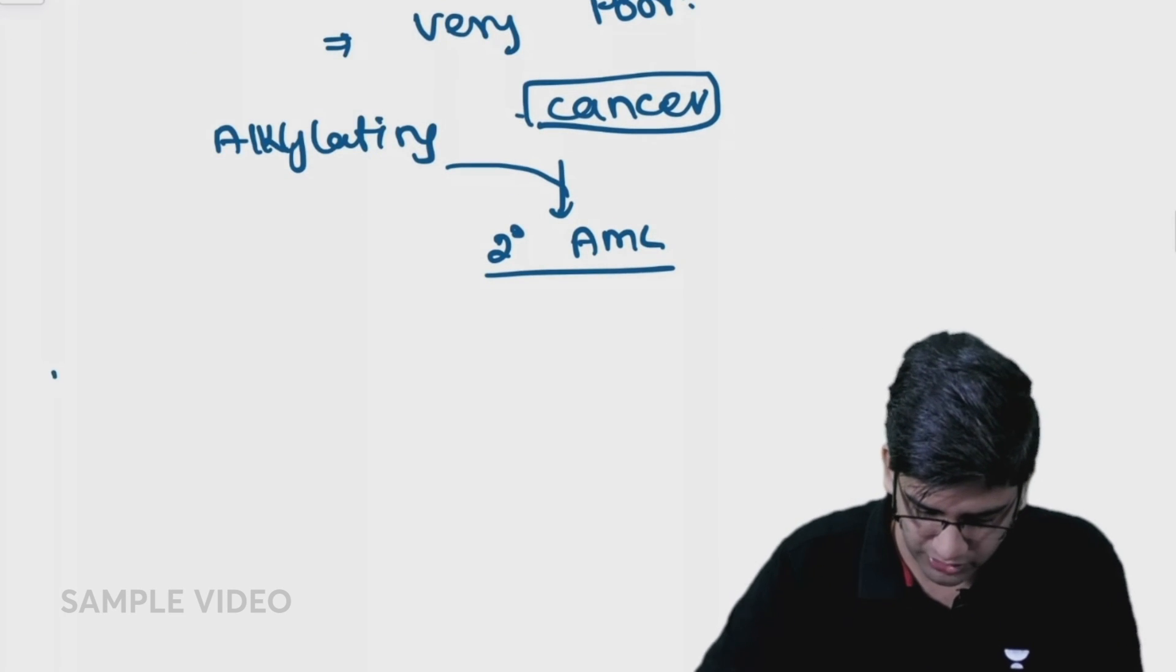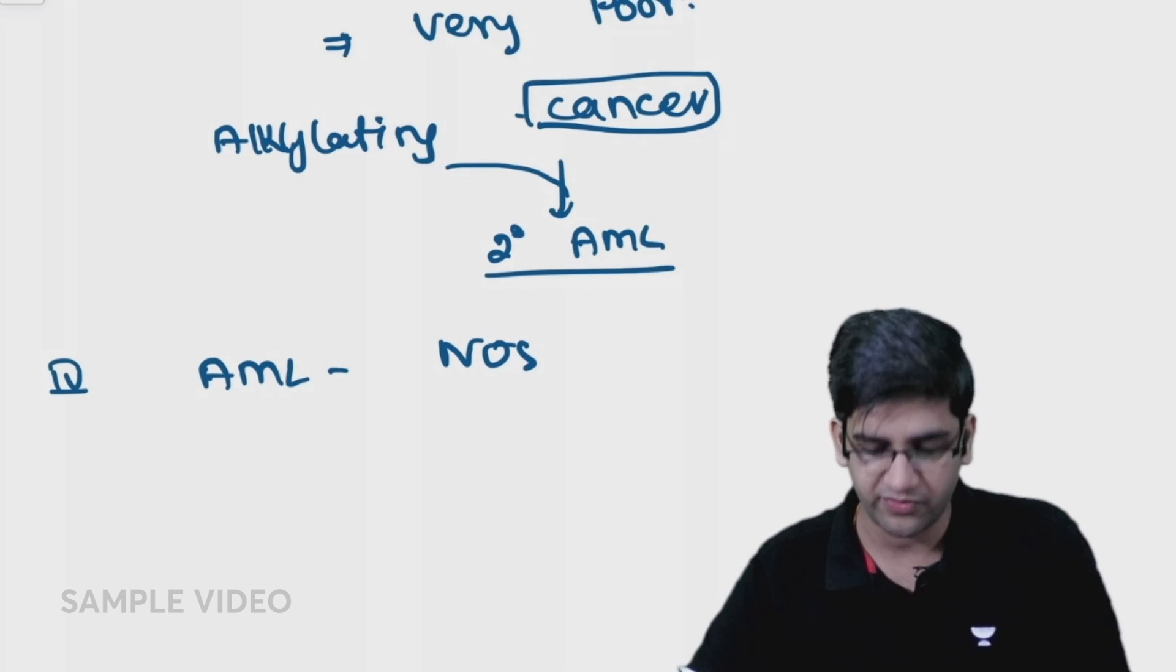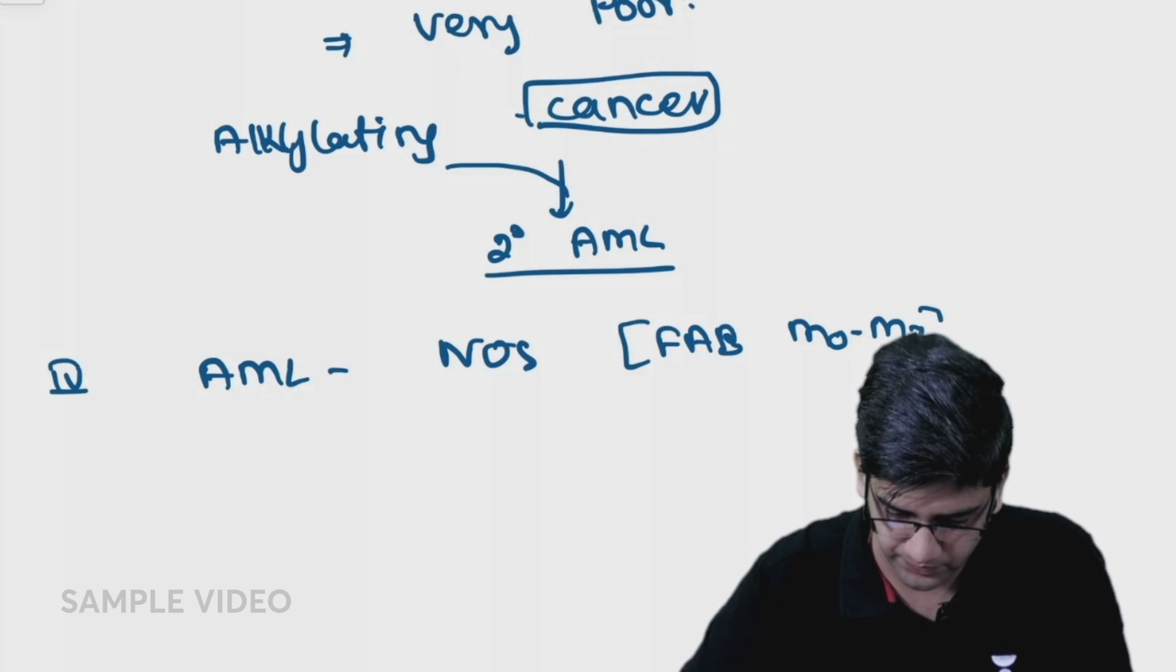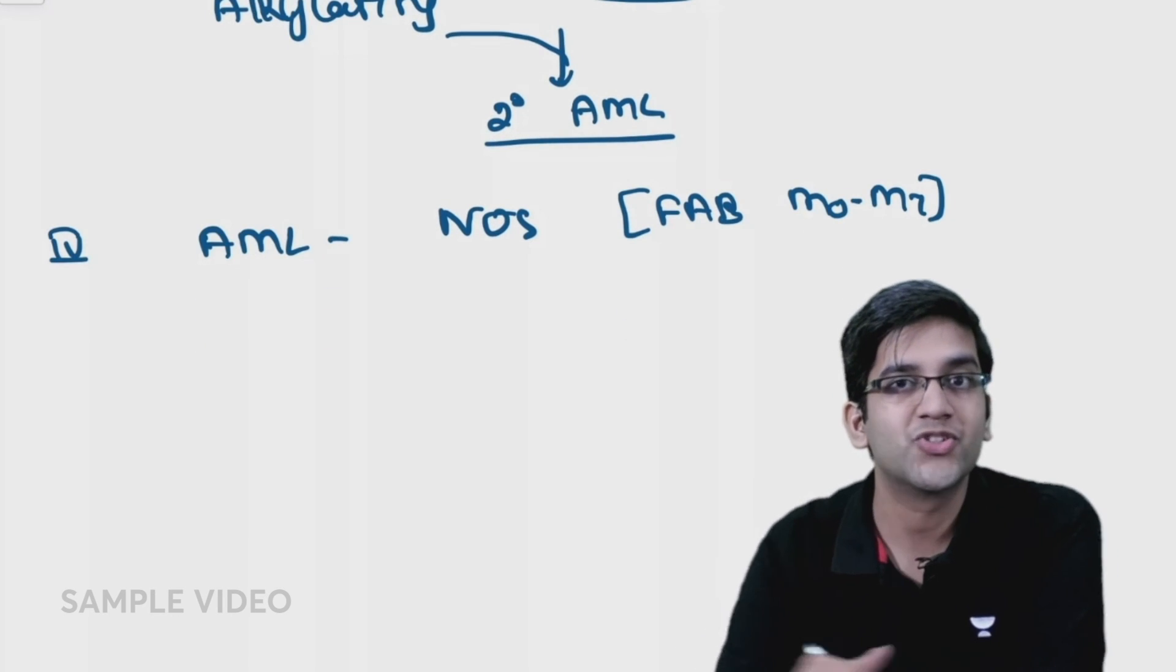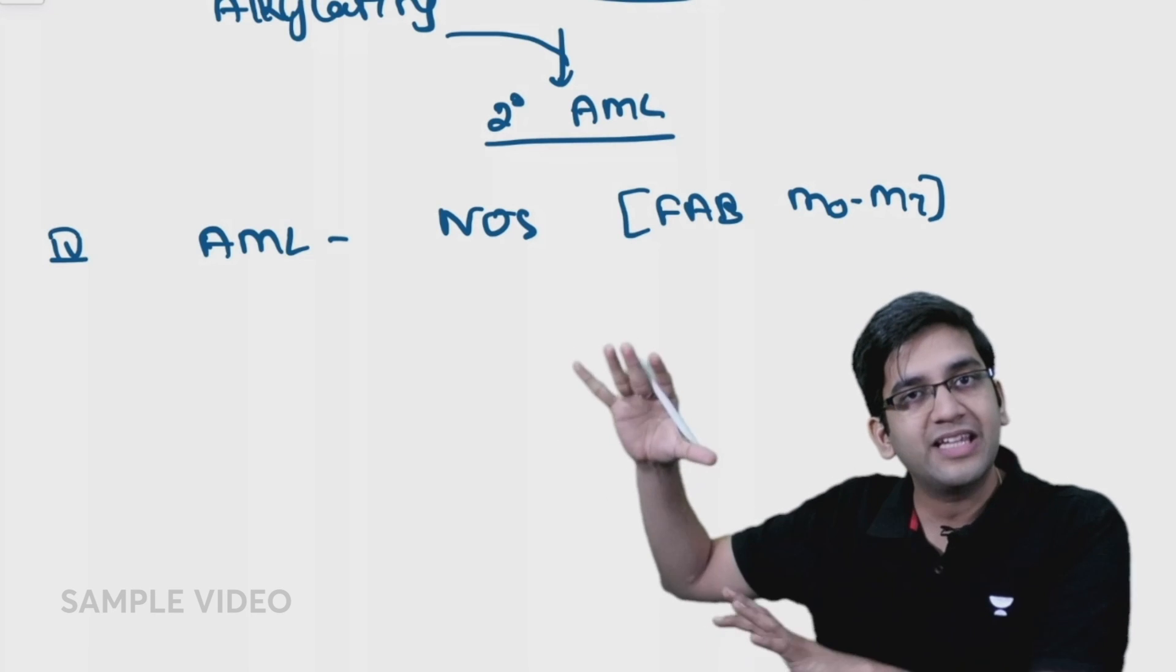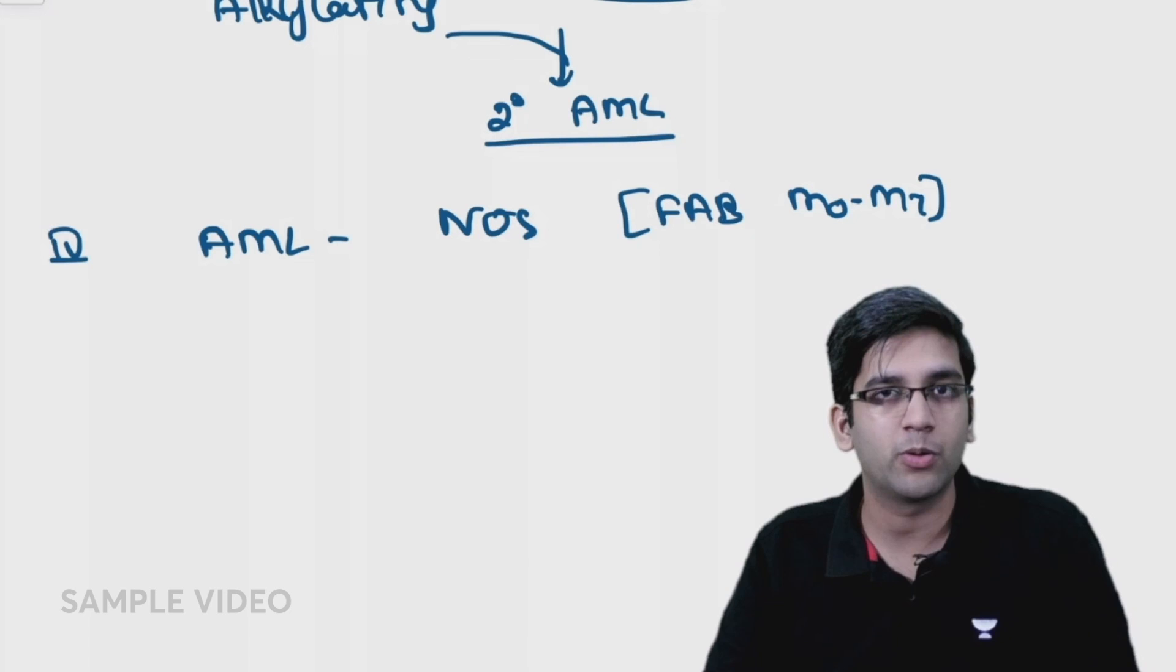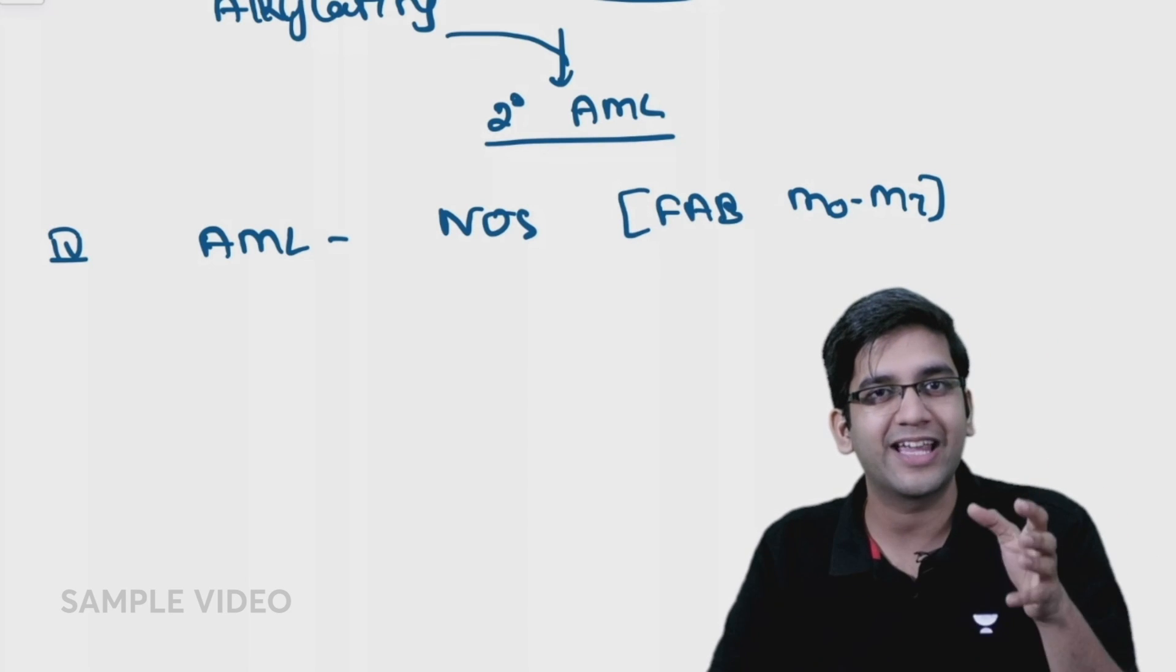The last one is AML-NOS, not otherwise specified. This is where your FAB classification of M0 to M7 comes. This makes it much easier - I'm just integrating both of them. Reiterating: recurrent genetic abnormality - three are good, one 11q23 has drug-eluting properties and poor prognosis.